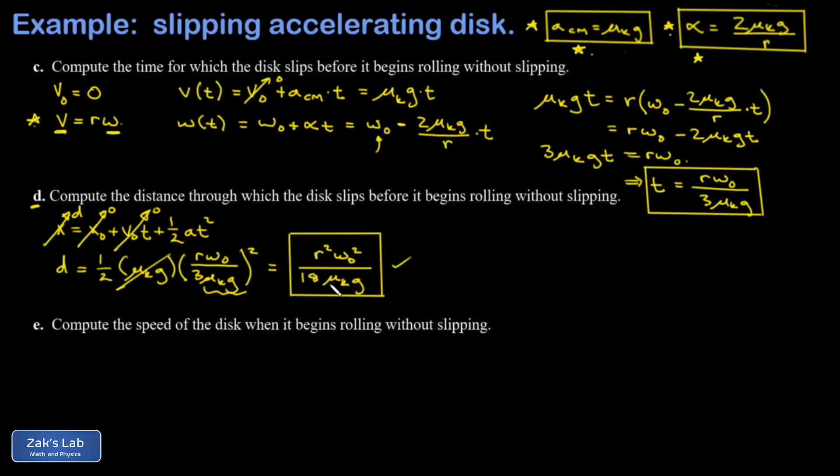Finally, in part e, we want the speed of the disk at the moment it begins rolling without slipping. And again, this is just basic kinematics applied to the acceleration that we already calculated and the amount of time it was accelerating. So I write down v equals v₀ plus at. The initial translational speed of the disk was 0. The acceleration of the disk was μₖg. The time it accelerated for is rω₀ over 3μₖg. And we get a really elegant answer out of this. So a μₖg is going to cancel. And it turns out the speed that it's moving after all this slipping is done is just one-third rω₀. And we're done.